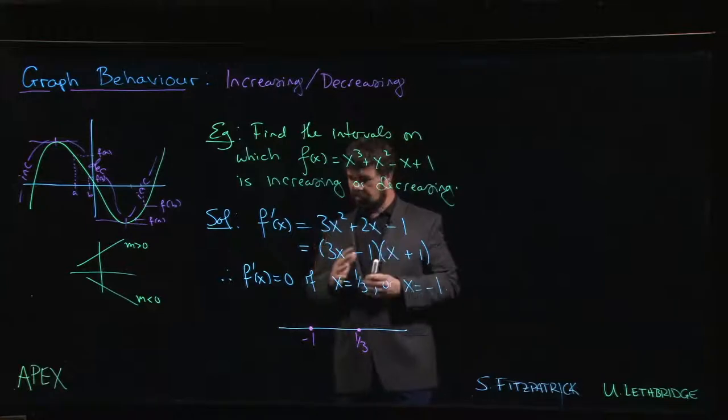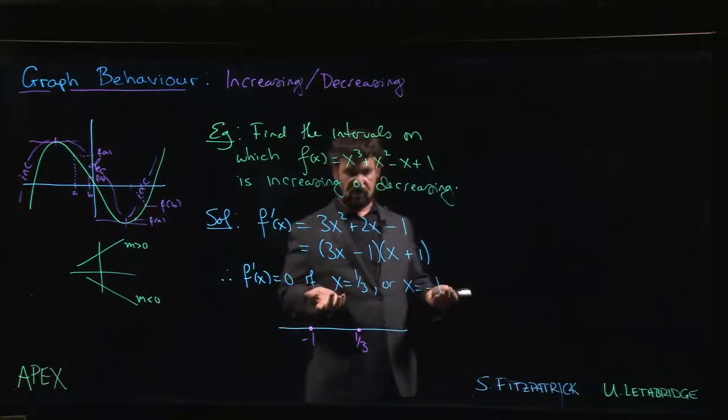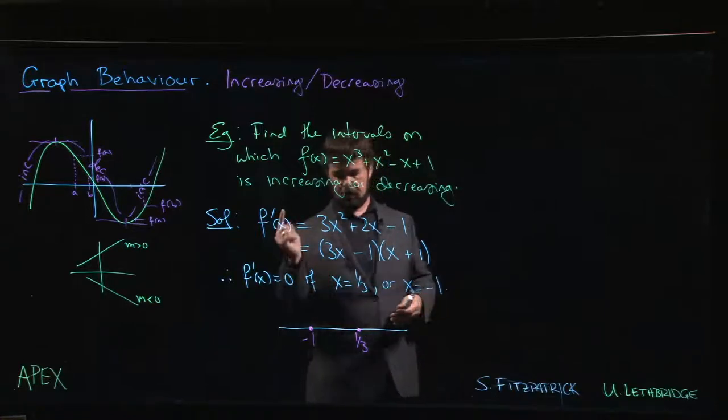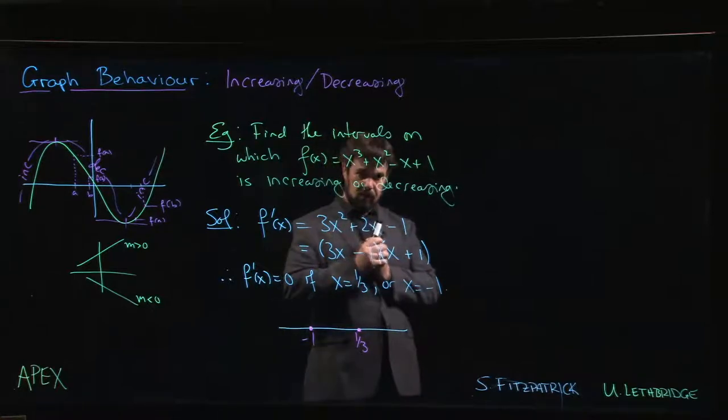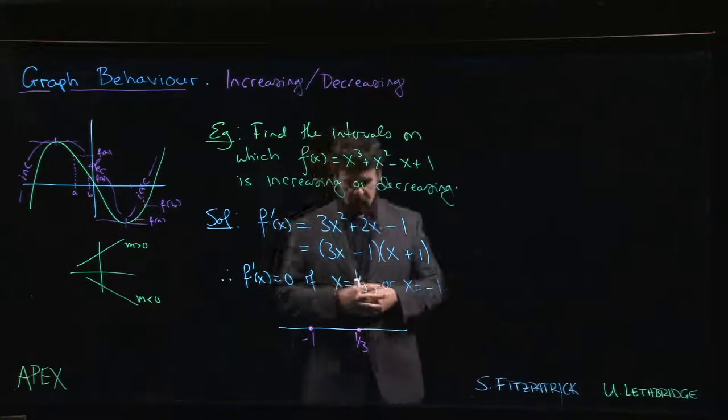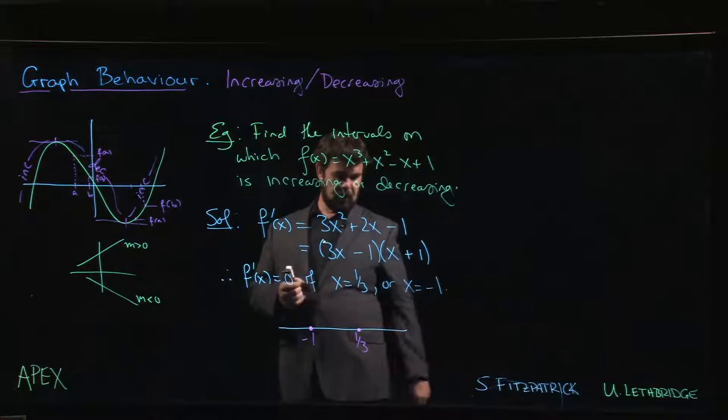People have different strategies for filling out the signs in each of these intervals. One strategy is to choose test values. We know that 1 is over here, 0 is in here, -2 is over here, and we plug those numbers into our derivative to see what we get. Once you get a bit of practice with this, you can actually get pretty quick with these and you can realize that if I'm picking a number out here...